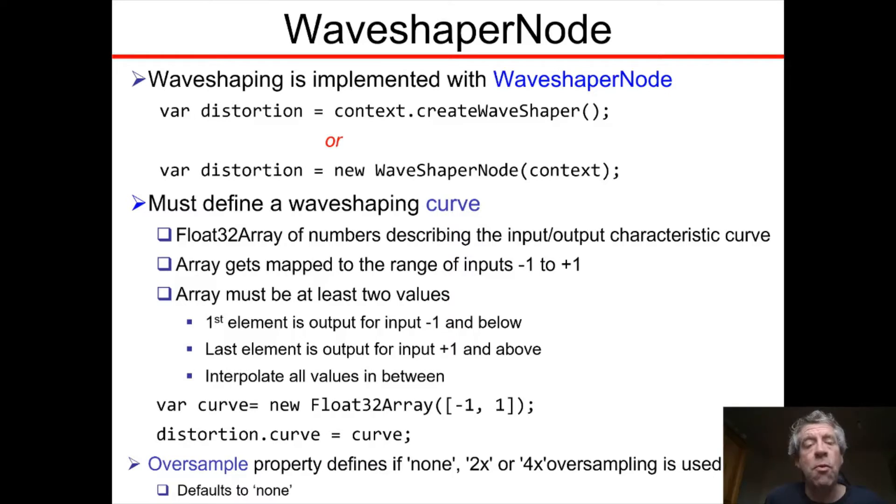There are two parameters with the WaveShaperNode. Looking at the bottom of the slide, the second of those parameters is oversampling, and it defines whether oversampling is used.